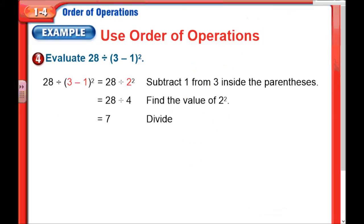Moving on. Another example here, we're taking 28, dividing it by the difference of 3 and 1 to the second power. Now, let me walk us through this. First, we're going to subtract 1 from 3 inside of our parentheses. That's of course 2. Now we're going to find the value of 2 squared, which is of course 4. Finally, finish by dividing. 28 divided by 4 is 7.